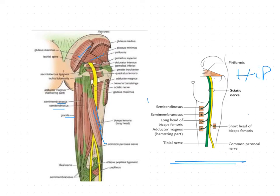The muscular branches supply the hamstrings, namely semimembranosus, semitendinosus, and the long head of biceps femoris, and also the hamstring part of adductor magnus. These four branches arise from the medial popliteal component of the sciatic nerve. A branch to the short head of biceps femoris arises from the lateral popliteal component.